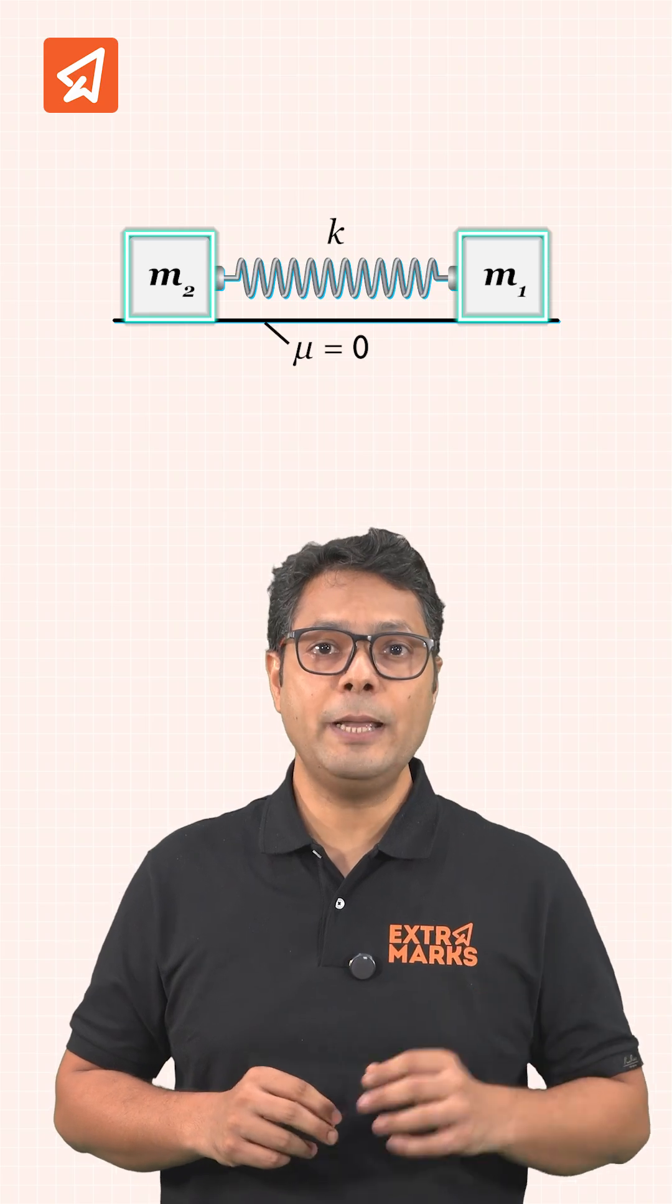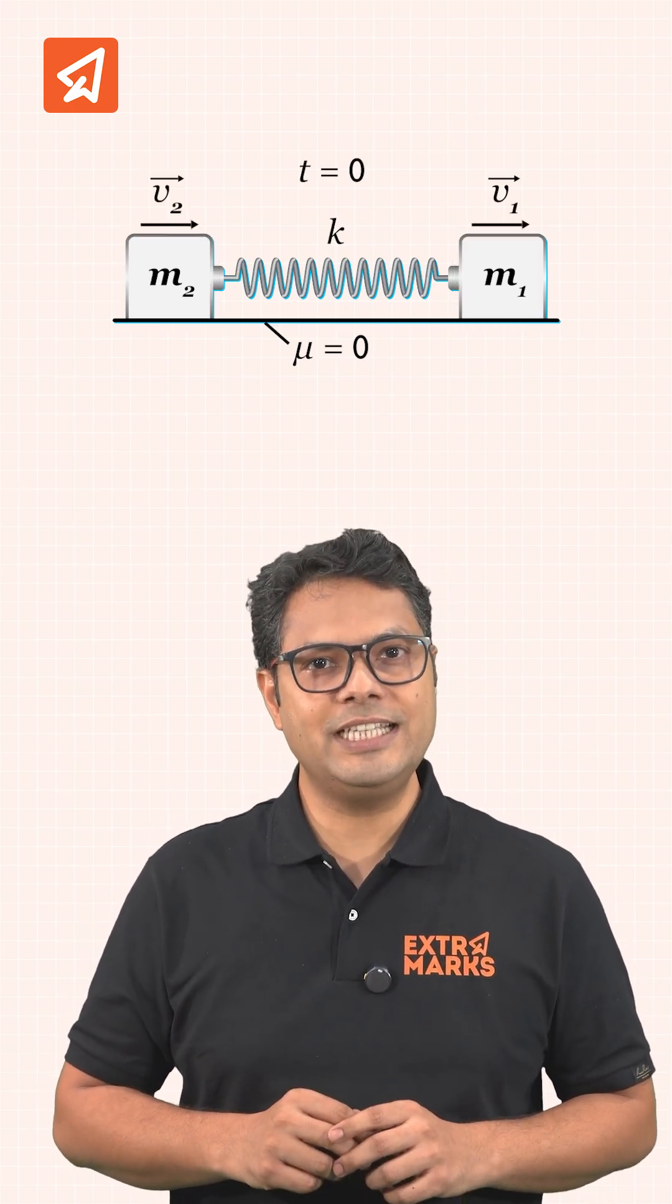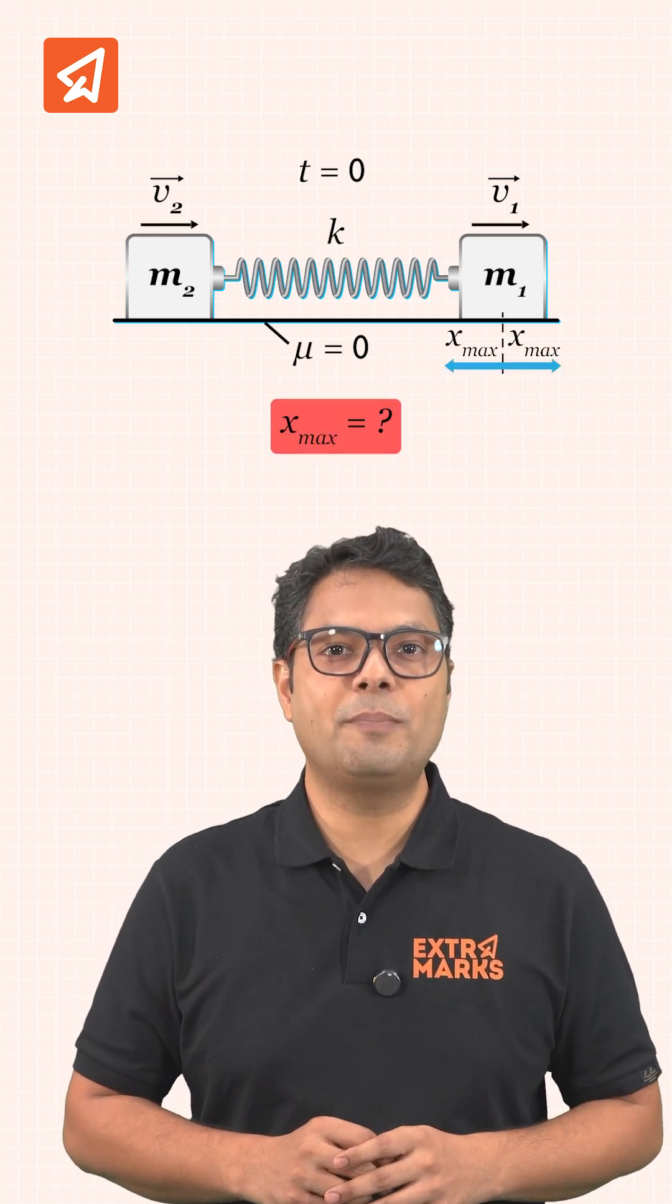So here a spring connects two blocks on a frictionless surface, which are given different velocities at time t equal to 0. Now the question is what is the maximum extension or compression in the spring?